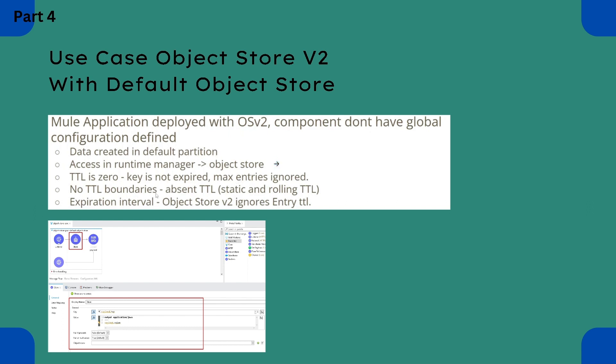The next point is that if TTL is 0, the key will not expire and max entries will also be ignored. The fourth point is that if TTL is absent, a static or rolling TTL will be applied based on whatever Mule version you are using.